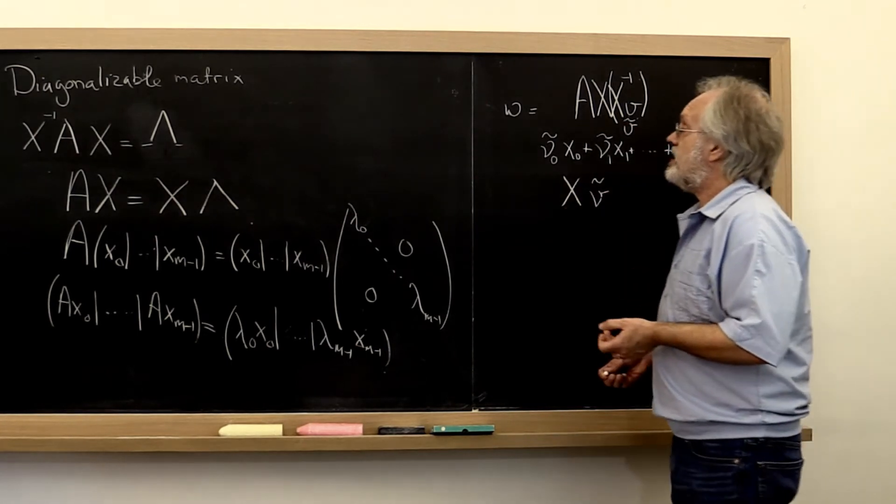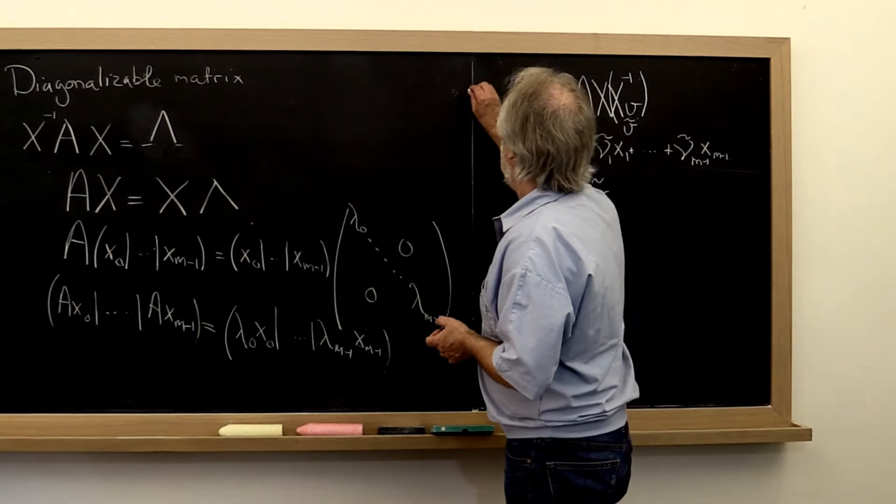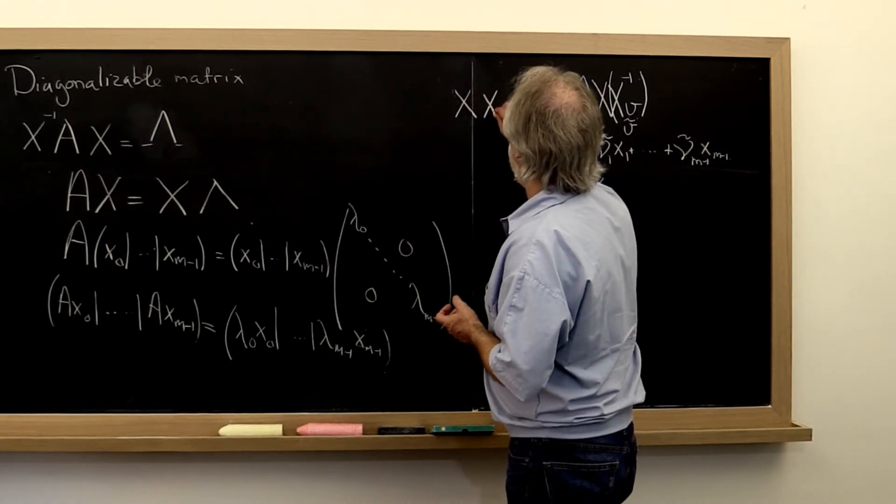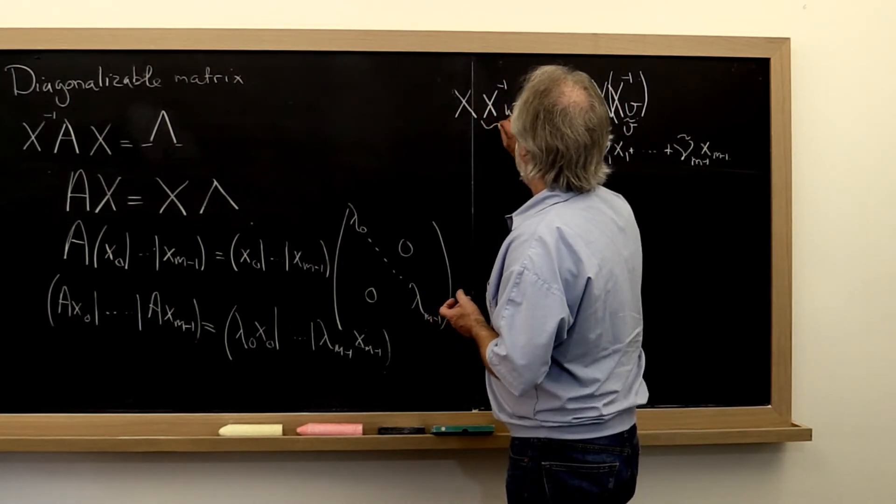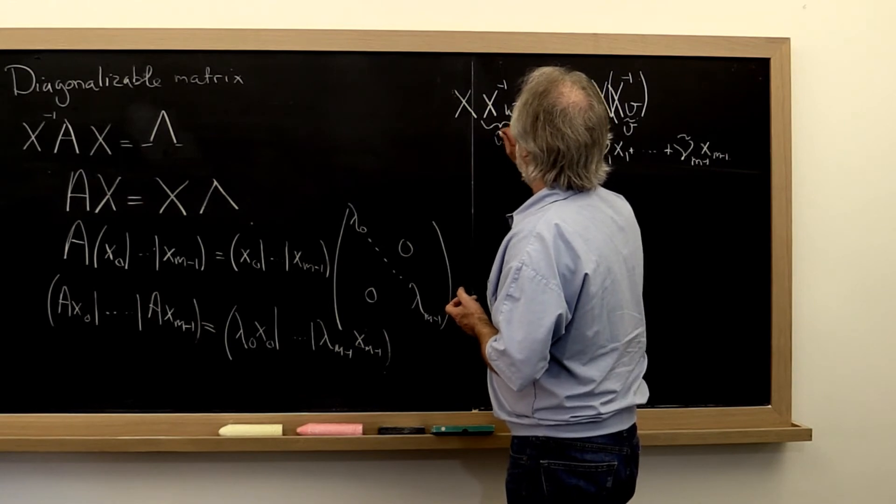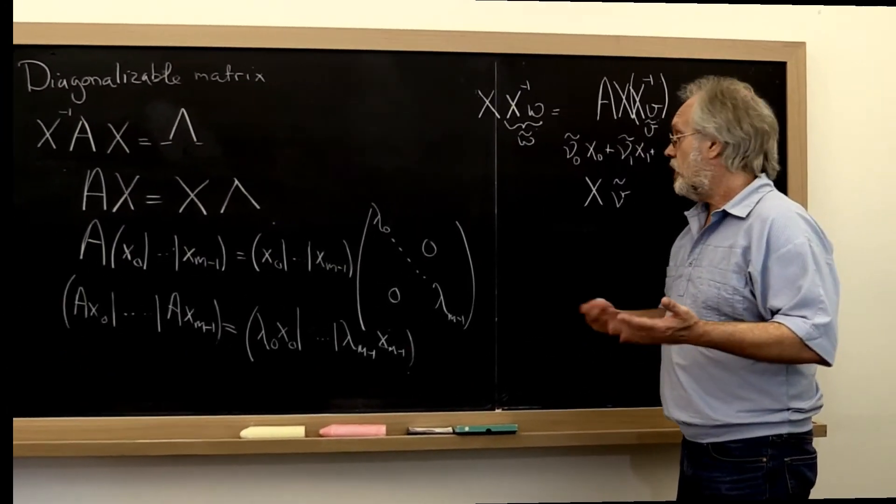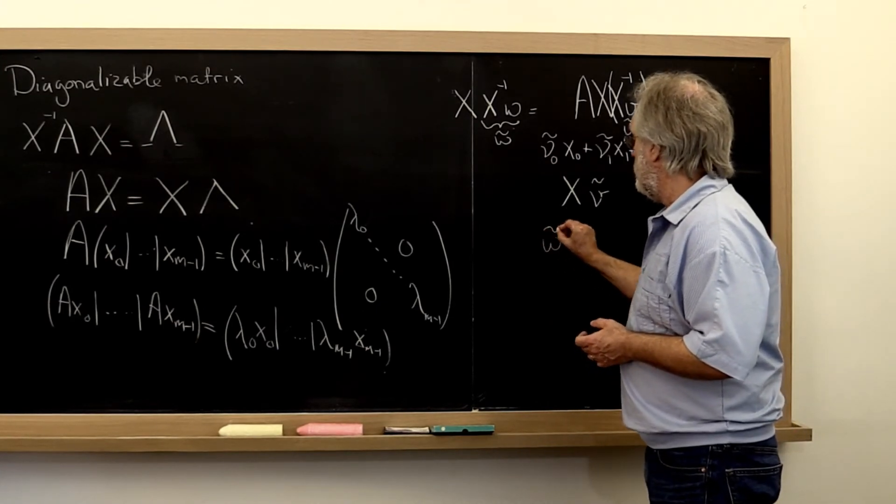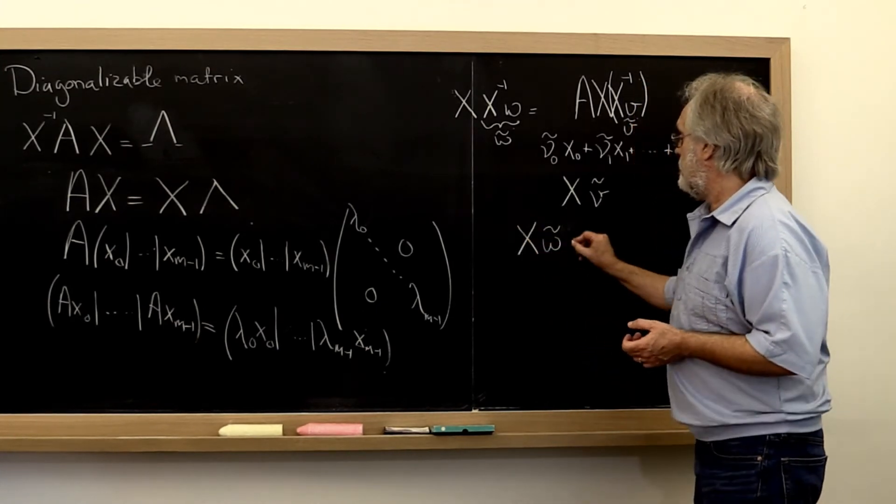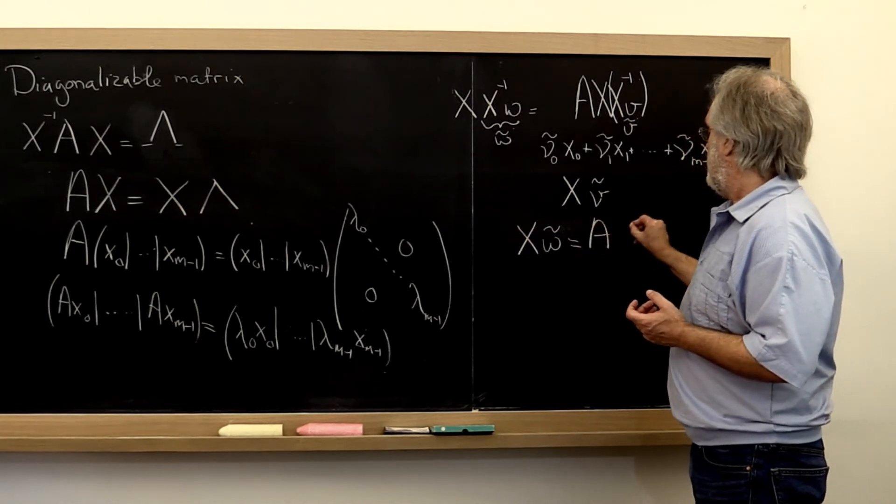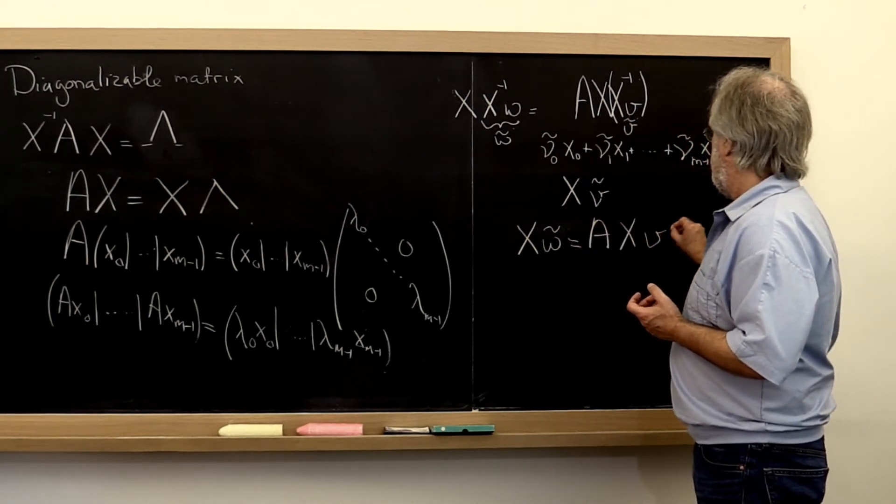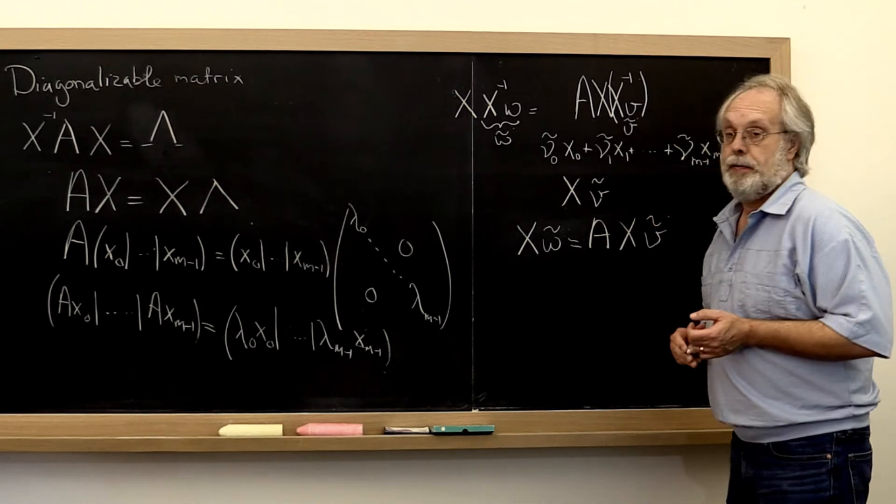And we can obviously do the exact same thing to w. We can say, let's also view that vector in the same basis. And then this here becomes the vector w tilde. So what do we have now? We have that w tilde, X times w tilde is equal to A times X v tilde.